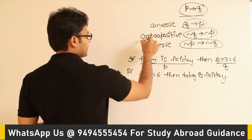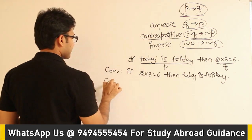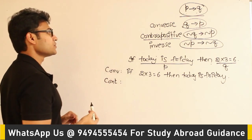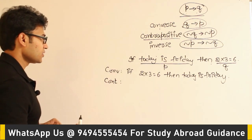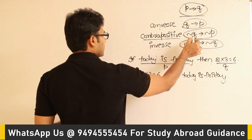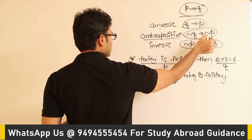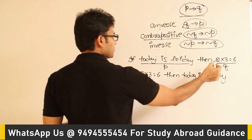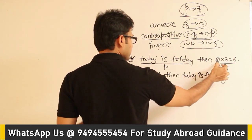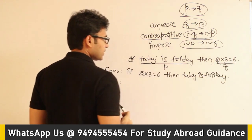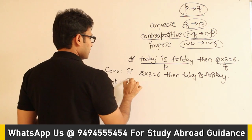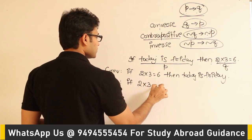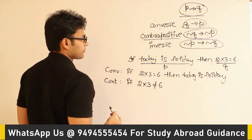The next one is contrapositive. What is the contrapositive of this? You are supposed to write negation of Q implies negation of P. Now, what is negation of Q? If Q is 2 into 3 equals 6, then negation of Q is: 2 into 3 is not equal to 6.